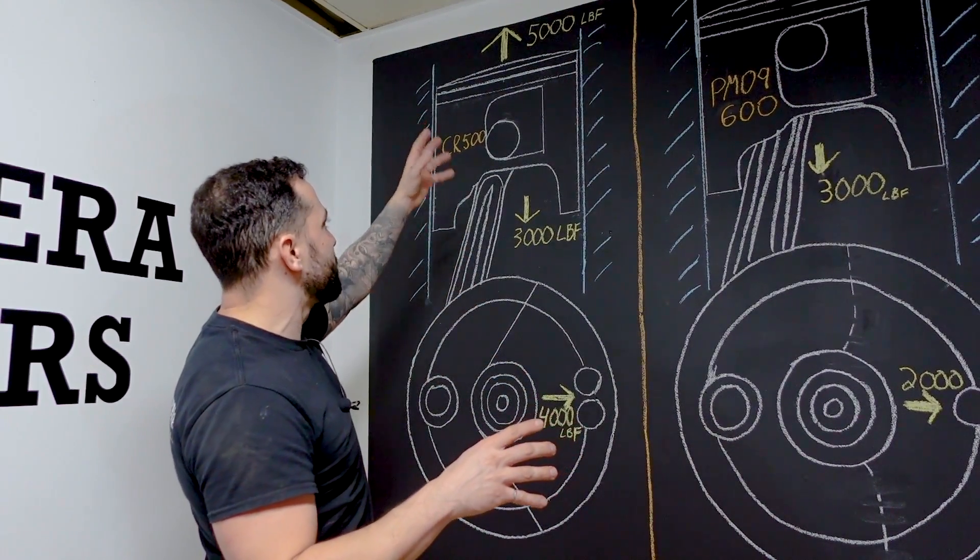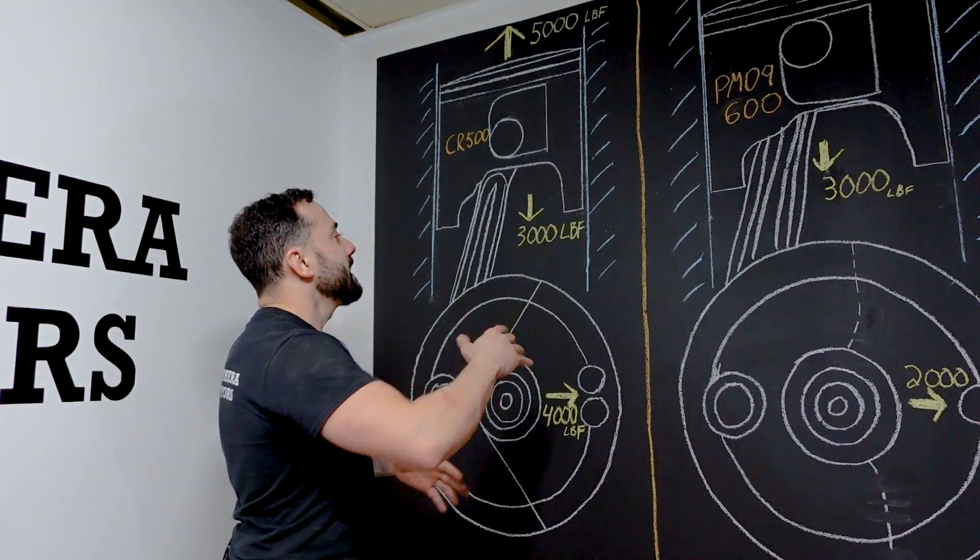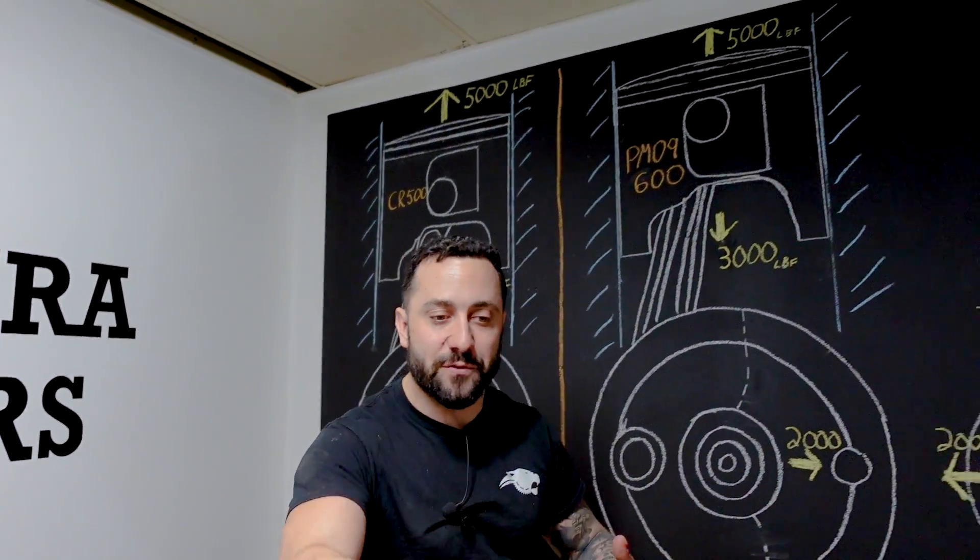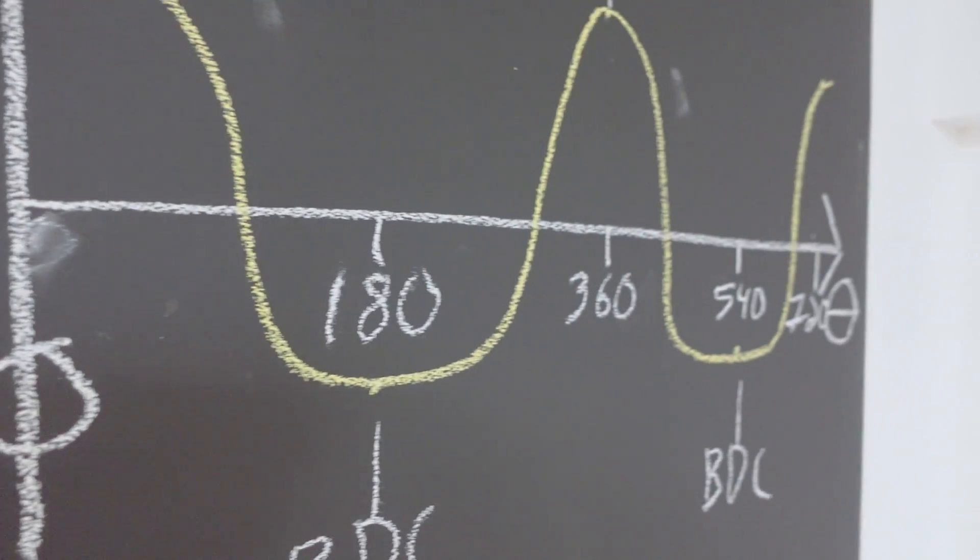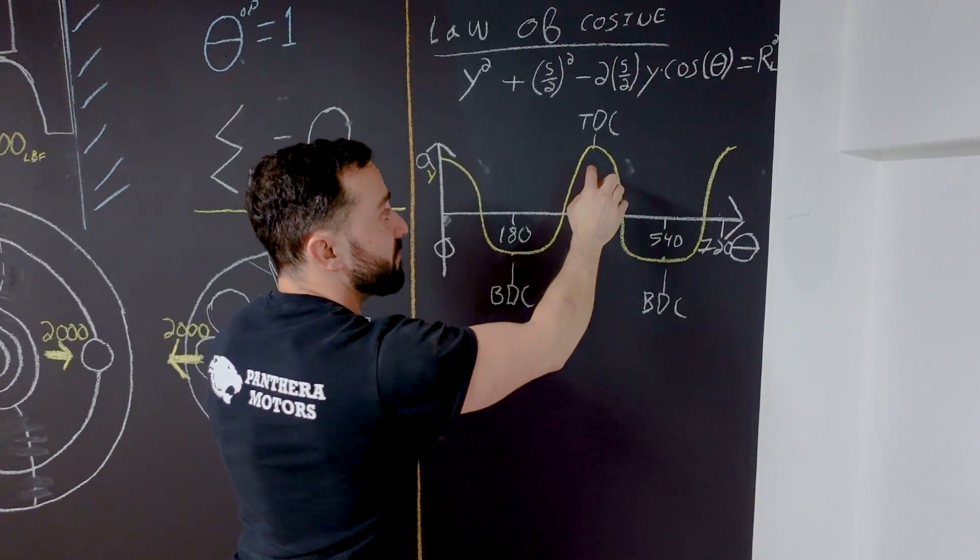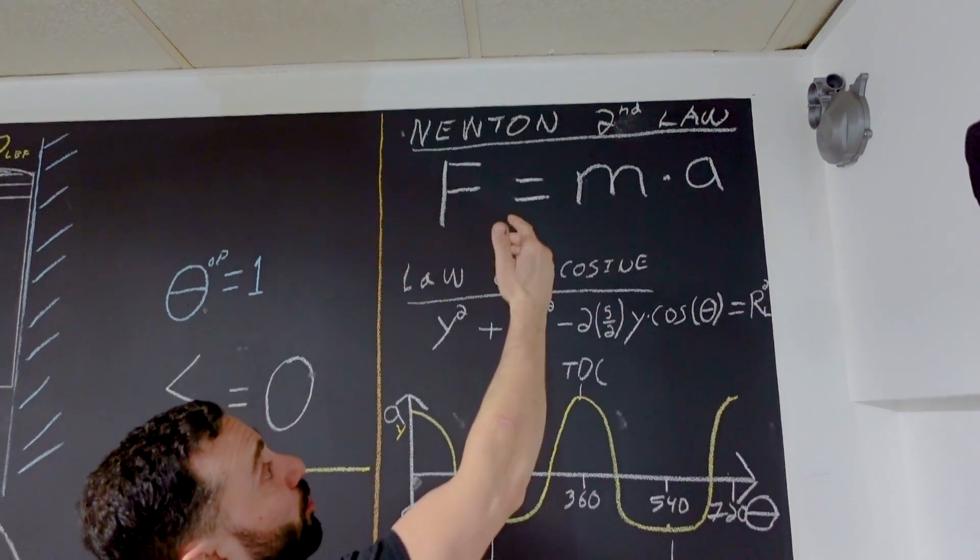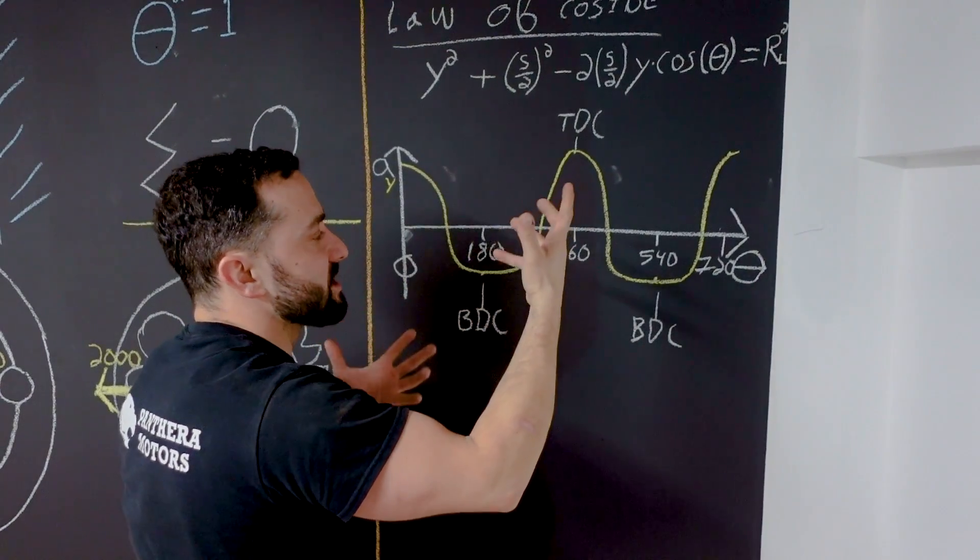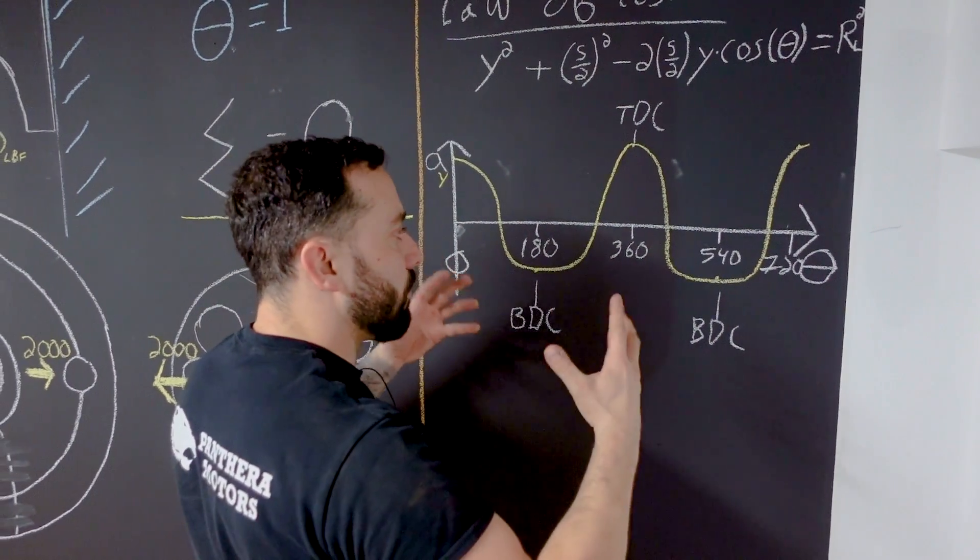Right there let's stop. Why is the force not the same at top and the bottom? Well, that is due to the geometry of the crankshaft itself and the acceleration of the piston in an engine. At top dead center, the force, which is equal to the acceleration times the mass of the piston, is higher than the bottom dead center. Why is that?